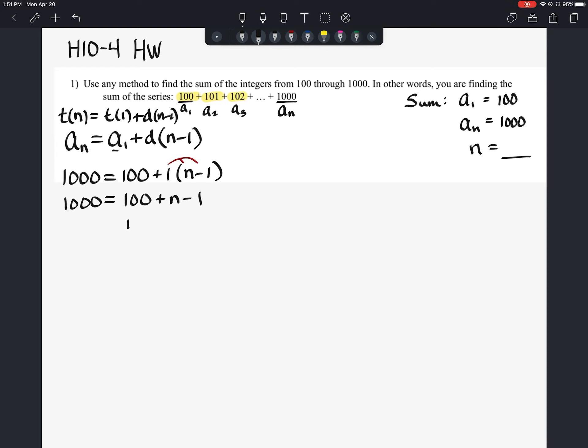Then we'll combine our like terms. We've got n plus 99 equals 1000. And then we're going to subtract 99 from each side.